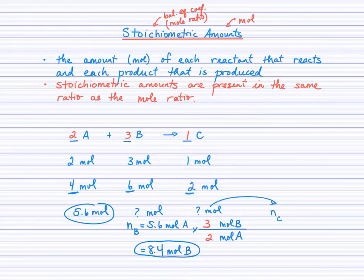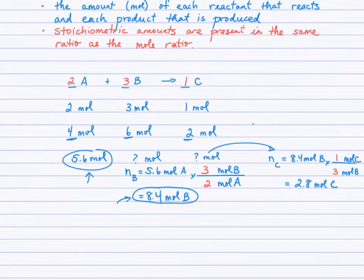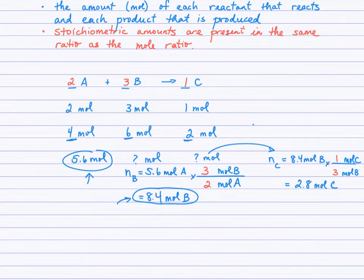a mole ratio calculation. Find the moles of C. You could start with either the 5.6 moles of A or the 8.4 moles of B. You're going to find that you get the same answer both times. So I'll start with the 8.4 moles of B just to mix it up and use the mole ratio between B and C. So three here and one here in order to generate the moles of C. So we finish with 2.8 moles of C.